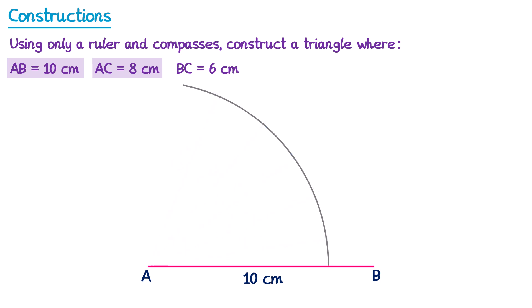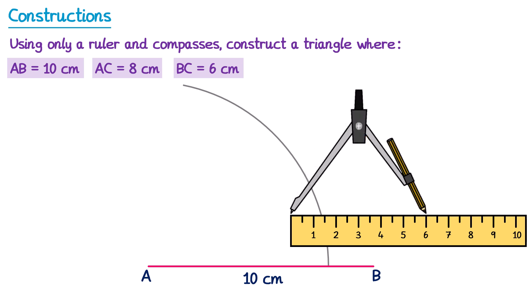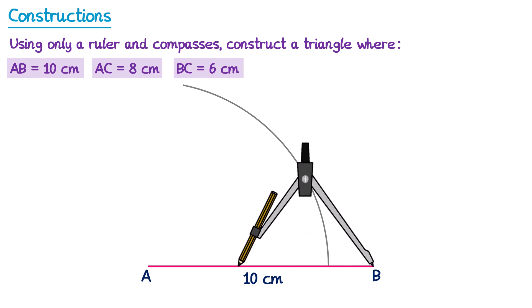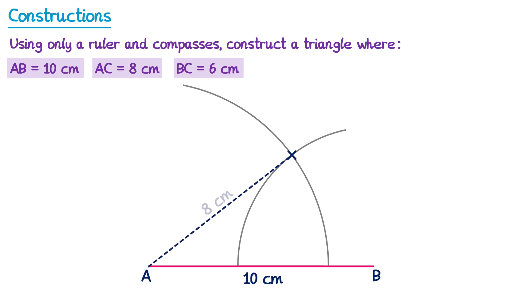If we then do a similar thing with line BC — BC is 6 centimetres — we take the pair of compasses and open them up to 6 centimetres. If we place them on point B and draw an arc, all of these points must be 6 centimetres away from point B. So our point C needs to be on the arc from A since it's 8 centimetres away, but also on the arc from B because it's 6 centimetres away. There's only one point that's on both of those arcs, which is this point here — so this must be our point C, and this is the triangle ABC.